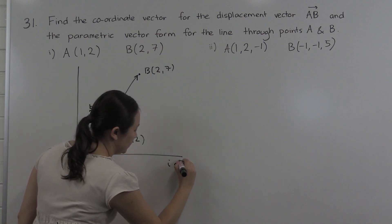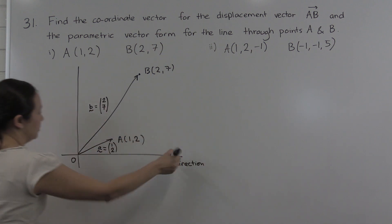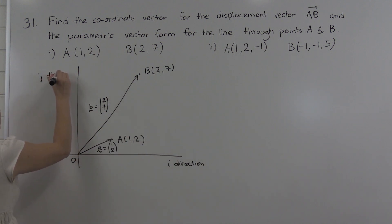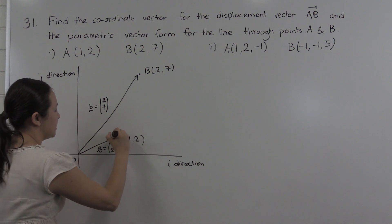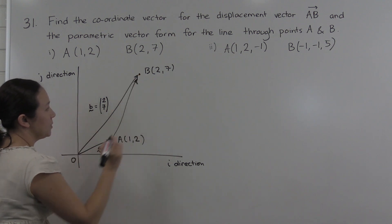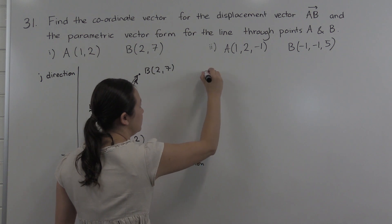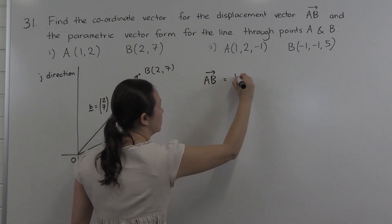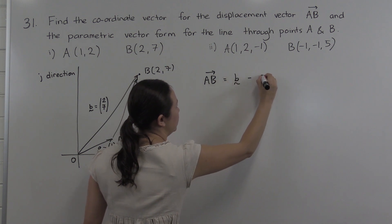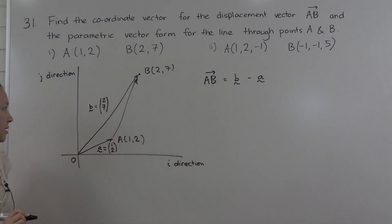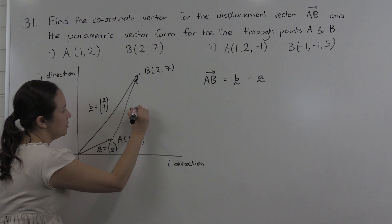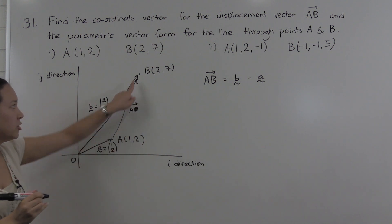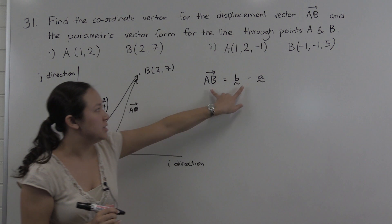So this is 2 across in the i direction and 7 in the j direction. The question is asking us for this vector AB — we want to know what this vector AB is here. The vector AB is the position vector of B minus the position vector of A. That makes sense because vector A plus vector AB, using the triangle law for addition, gives vector B. That's where this comes from.